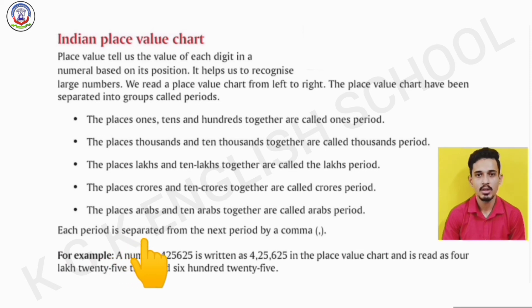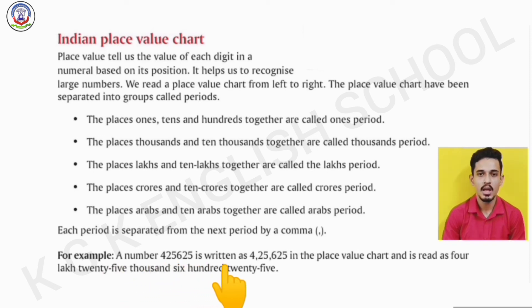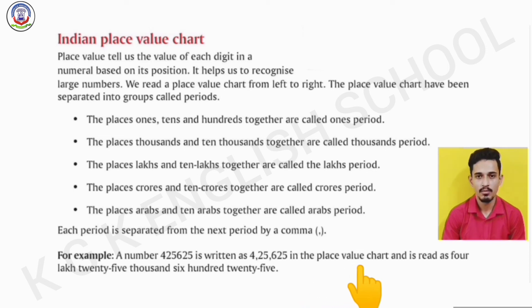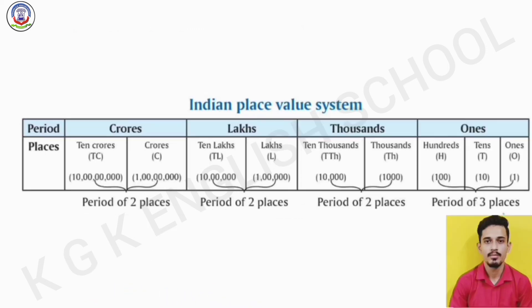Each period is separated from the next period by a comma. For example, the number 4,25,625 is written with commas in the place value chart and is read as four lakh twenty-five thousand six hundred twenty-five.